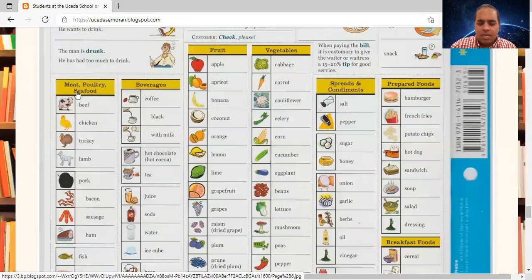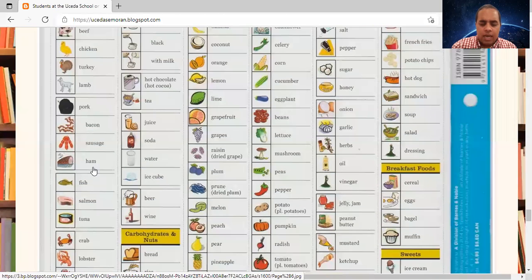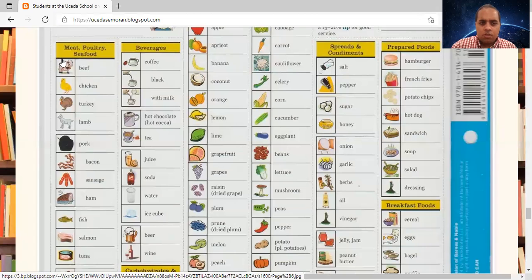Please say meat, poultry, seafood. Poultry is similar to chicken. Meat, poultry, seafood. Please say beef, chicken, turkey, lamb, pork, bacon, sausage, ham.